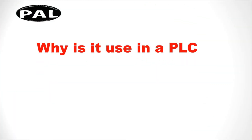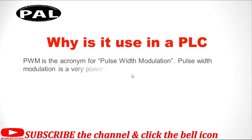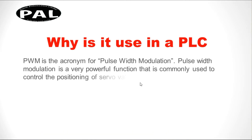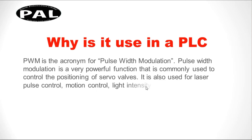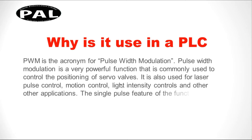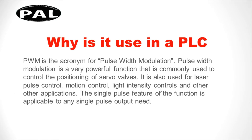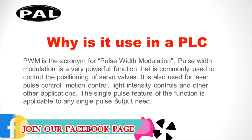Why is PWM used in a PLC? PWM is the acronym for pulse width modulation. It is a very powerful function commonly used for the control and positioning of servo motors. It is also used for laser pulse control, motion control, and light intensity control — intensity being the brightness of your light. PWM controls these and other applications. The single pulse feature is applicable to any single pulse output need.